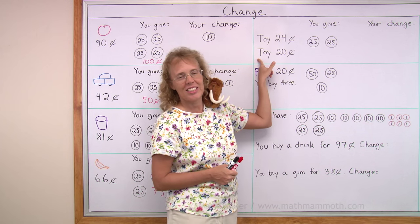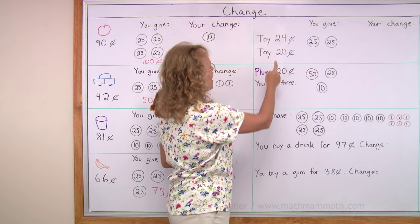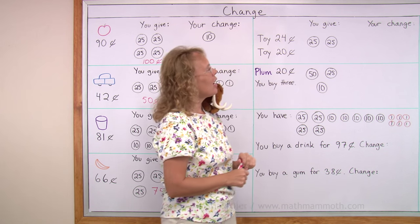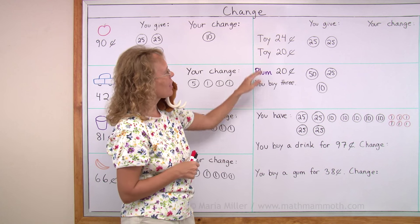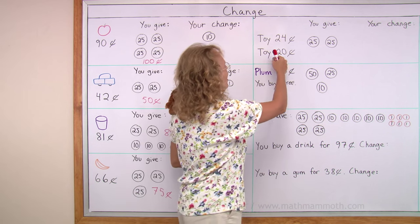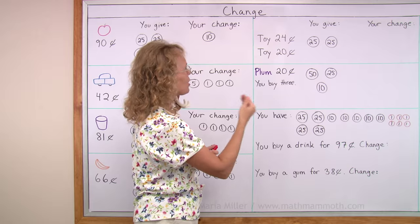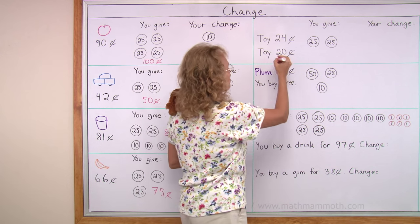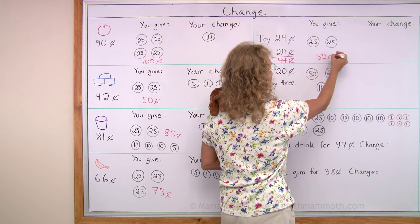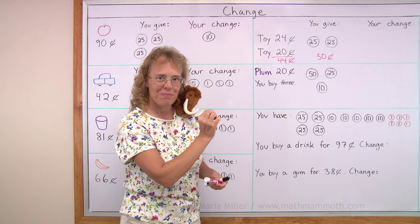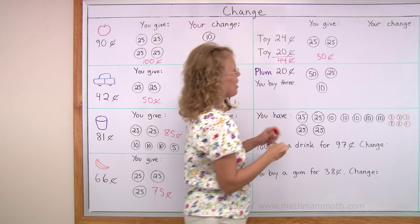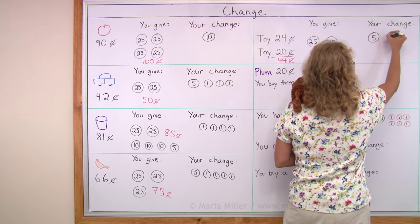Over here, let's say you buy two toys. One costs 24 cents, the other one costs 20 cents, and you give this much money to pay. How much will your change be? We need to first figure out the total: 24 and 20 — you add those and you get 44 cents. And then you give two quarters, which is 50 cents. Now you can figure out the change: 44 to 50, how much is in between? 6 cents — a nickel and a penny.